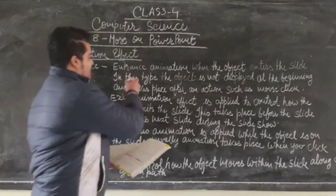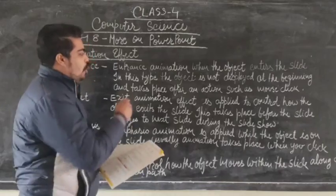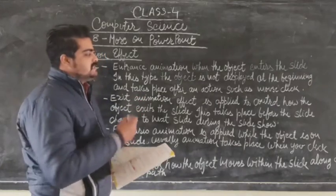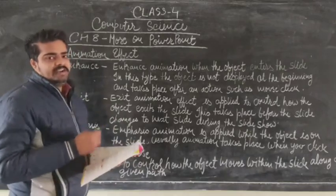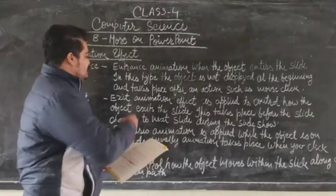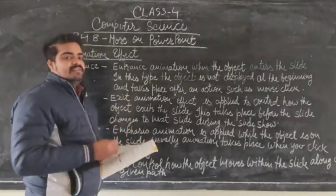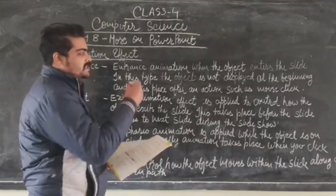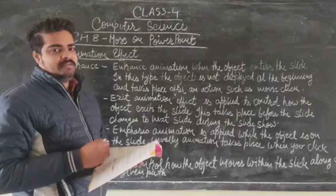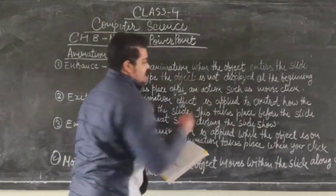The first type is entrance animation. In entrance animation, the object is not displayed at the beginning of the slide. It takes place after an action such as a mouse click — when you click the mouse, the object enters and displays on the slide with the entrance animation.